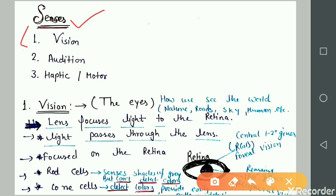We have three concepts: vision, audition, and haptic or motors. Vision is related to visualization, audition is related to hearing, and haptic is related to the touch concept. These are the basic concepts of senses.